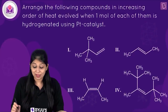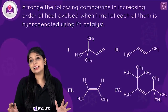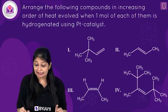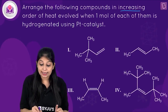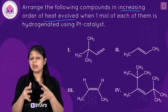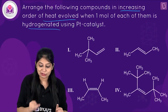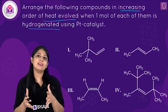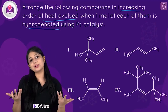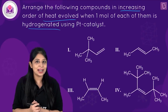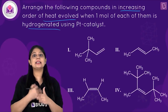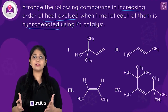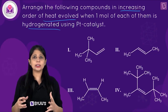Let's have a look at this question. We are given four alkenes and we have to arrange them in increasing order of heat evolved when one mole of each of them is hydrogenated. We know that the heat of hydrogenation is inversely proportional to the stability of the alkene — the more stable the alkene, the less heat will be evolved.